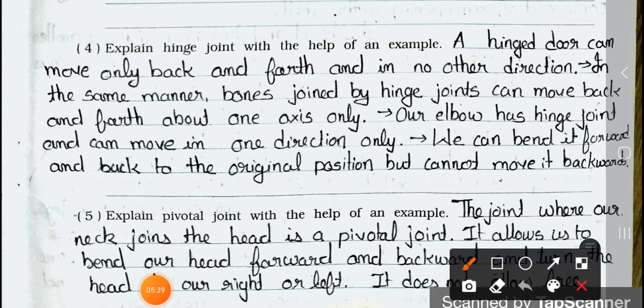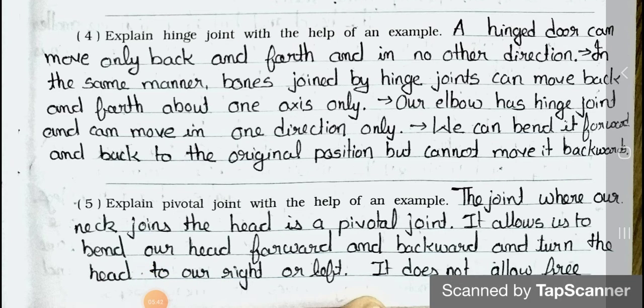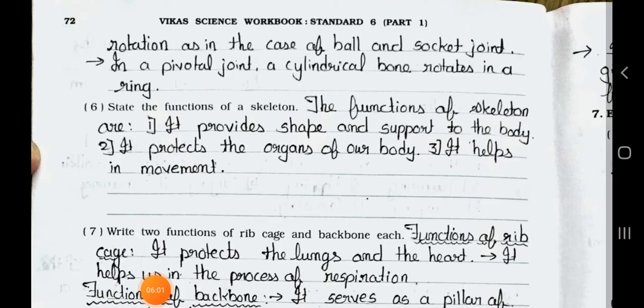Question 5: Explain the pivotal joint with the help of an example. The joint where our neck joins the head is a pivotal joint. It allows us to bend our head forward and backward and turn the head to our right or left. It does not allow free rotation as in the case of a ball and socket joint. In a pivotal joint, a cylindrical bone rotates in a ring.